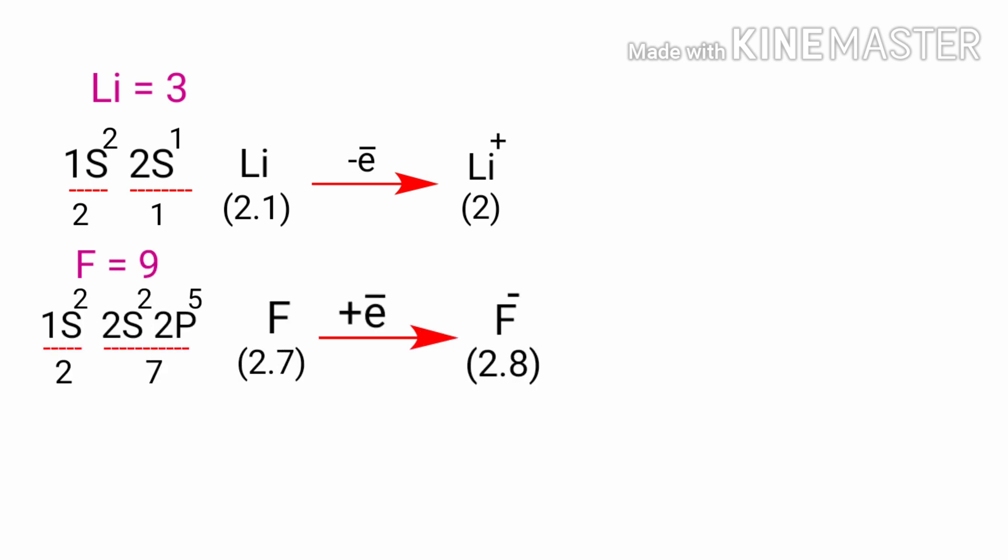The Fluorine has seven electrons in its outer shell. Again, it is more energy efficient for Fluorine to gain one electron than to lose seven. Therefore,